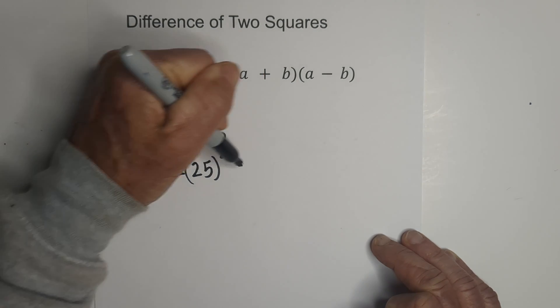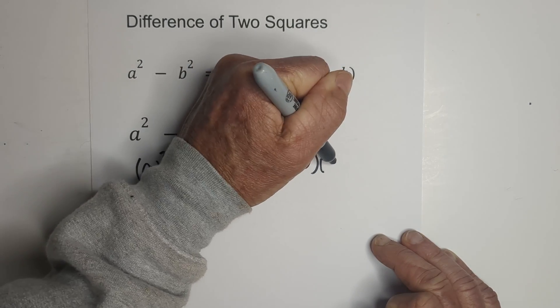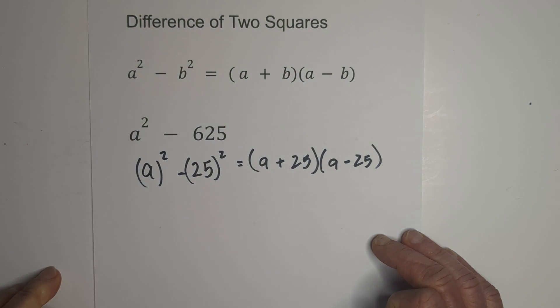So we have a plus 25 times a minus b, 25. So that's how you can rewrite a squared minus 625.